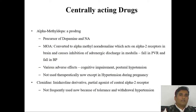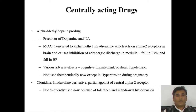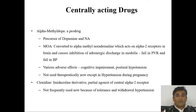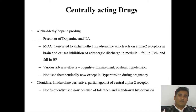Centrally acting drugs: Methyldopa is converted to methylnoradrenaline, which acts on alpha-2 receptors in the CNS to inhibit central sympathetic outflow and decrease blood pressure. It may lead to cognitive impairment and postural hypotension, and is not practically used except in pregnancy. Clonidine also has alpha-2 receptor agonist activity, decreasing norepinephrine release.